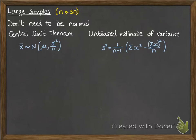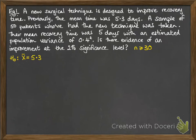Here's our first example. A new surgical technique is designed to improve recovery time. Previously, the mean time was 5.3 days. A sample of 50 patients who've had the new technique was taken. Their mean recovery time was 5 days with an estimated population variance of 0.4 squared. Is there evidence of an improvement at the 2% significance level? First, we know that n is larger than 30, so we can make assumptions about the mean being normally distributed by the Central Limit Theorem.